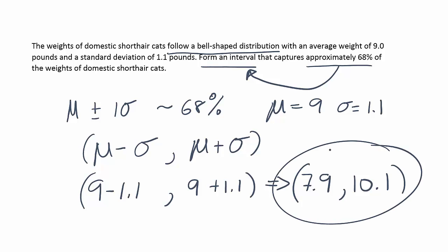The span from 7.9 to 10.1 pounds should capture approximately 68% of all the weights of domestic short-haired cats. The reason why that's the case is because we're told those weights follow a bell-shaped distribution, and we used exactly one standard deviation above the mean and one below. According to the empirical rule, that span captures approximately 68% of all the data under a bell curve.